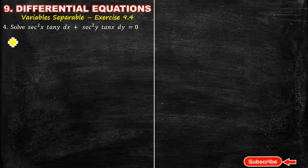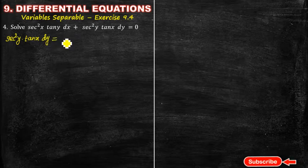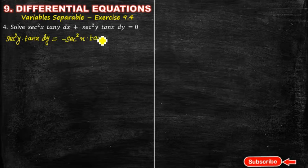Firstly, x part is segregated. What is the meaning? Here secant squared y tan x dy equals minus secant squared x tan y dx.